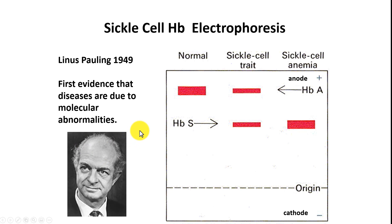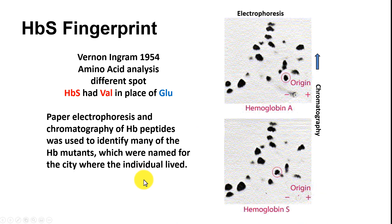Linus Pauling proved this was a molecular-level disease when he electrophoretically separated the hemoglobins of normal HBA and sickle cell HBS, and showed that individuals with the trait — the carriers — had both forms. It was a difference in charge on the proteins. It wasn't known until 1954 when Vernon Ingram did peptide maps, using chromatography and electrophoresis of trypsin-digested hemoglobin to find the differing peptide and perform amino acid analysis on it.